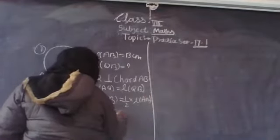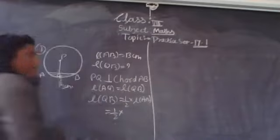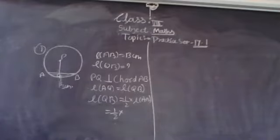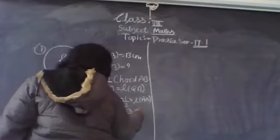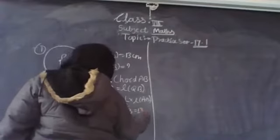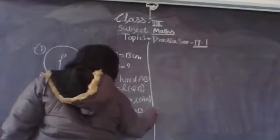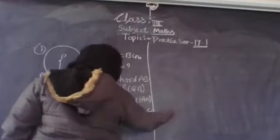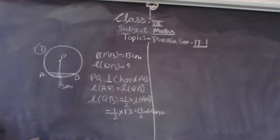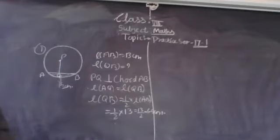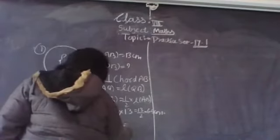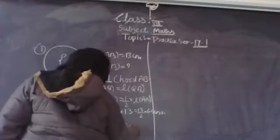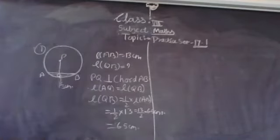So QB is equal to half the length of AB. Since AB is 13cm, QB equals half of 13, so the answer is 6.5cm. So question number 1 is completed.